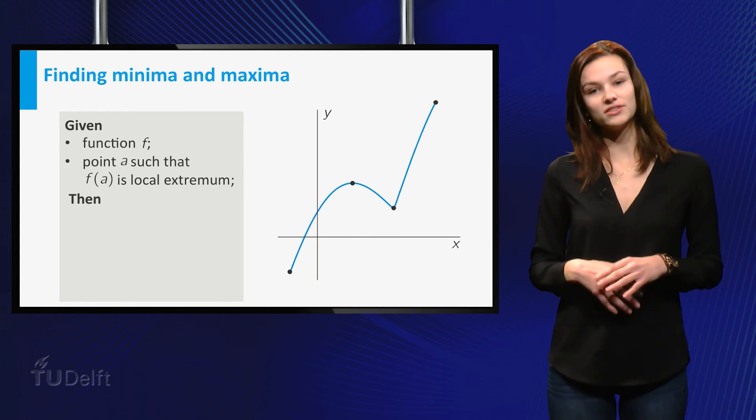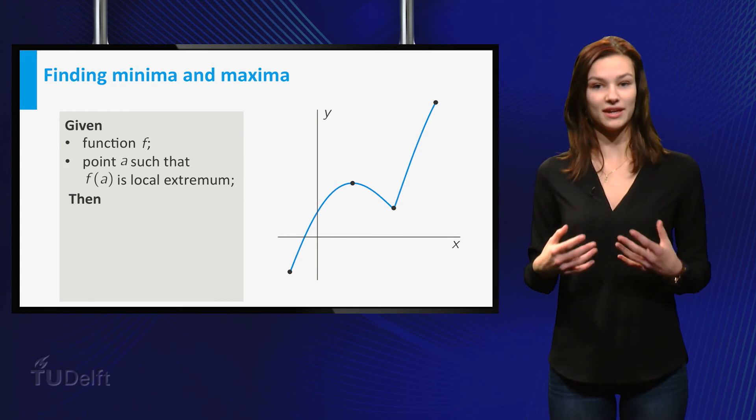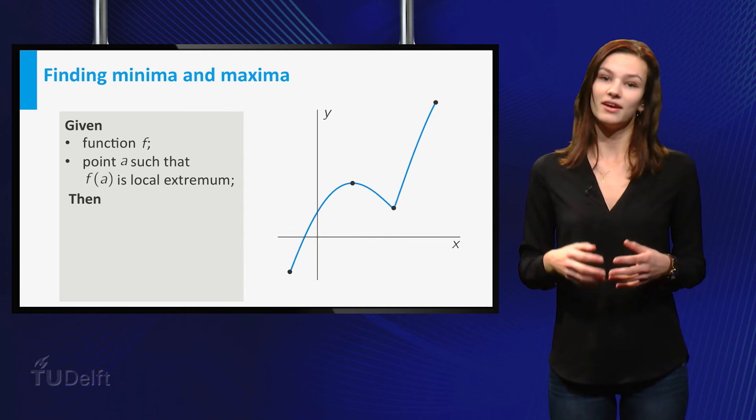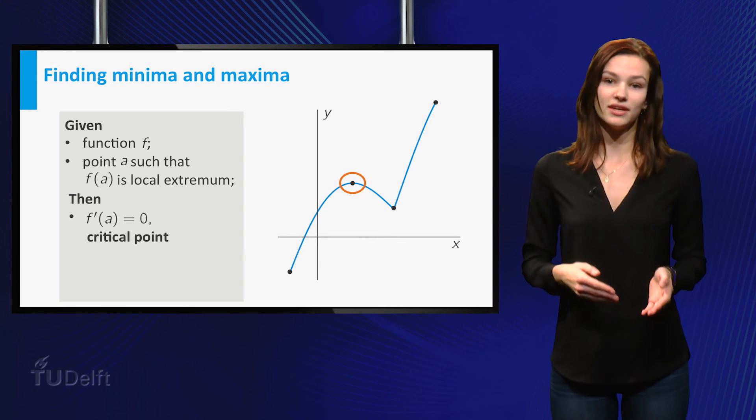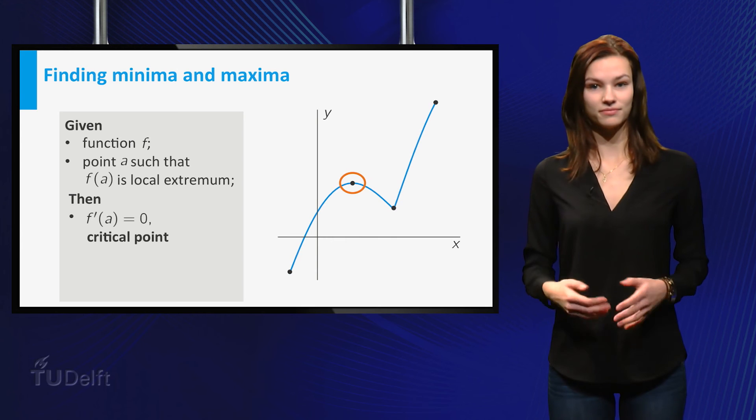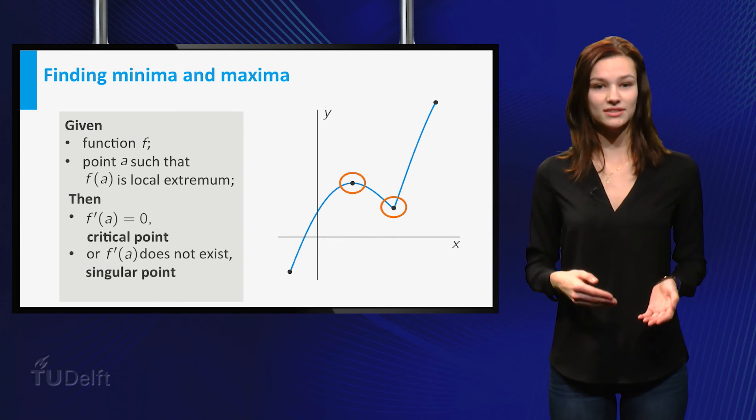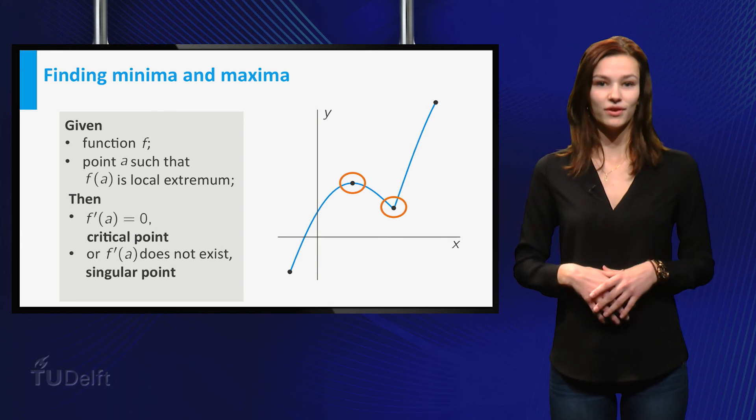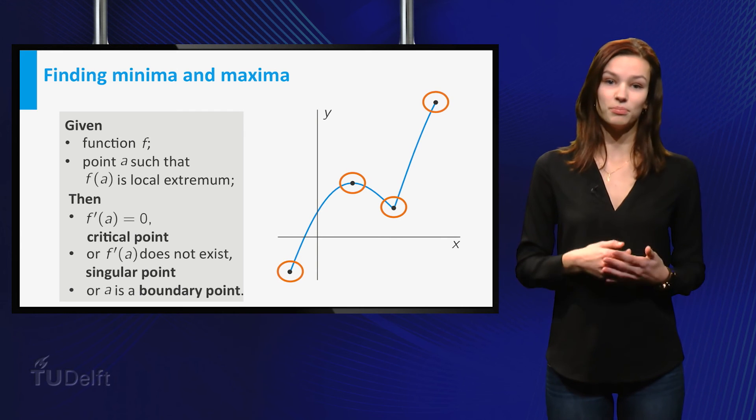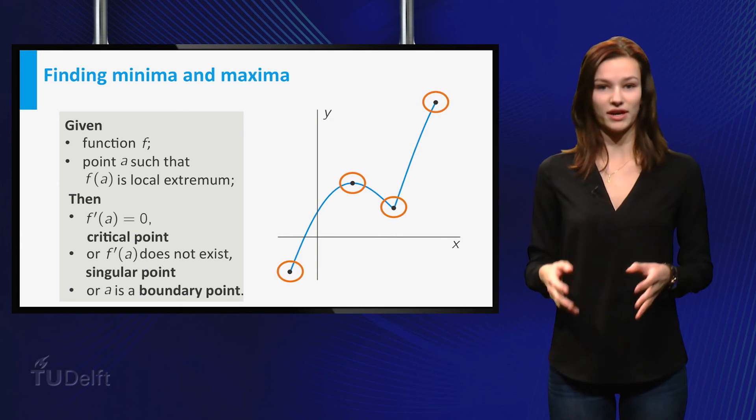If a function f attains a local maximum or minimum at x equals a, then either the derivative of f in a equals zero, f is not differentiable at x equals a, or the point a is a boundary point of the domain of f.